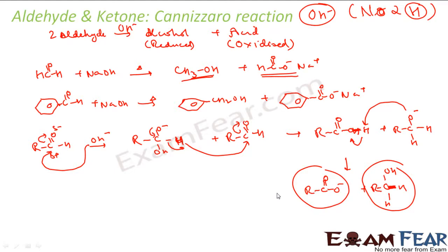To summarize the mechanism: when there is no alpha hydrogen, OH⁻ attacks the carbonyl carbon. This helps kick out the hydrogen as H⁻, which then attacks the other carbonyl carbon. One molecule becomes alcohol and the other becomes carboxylic acid.